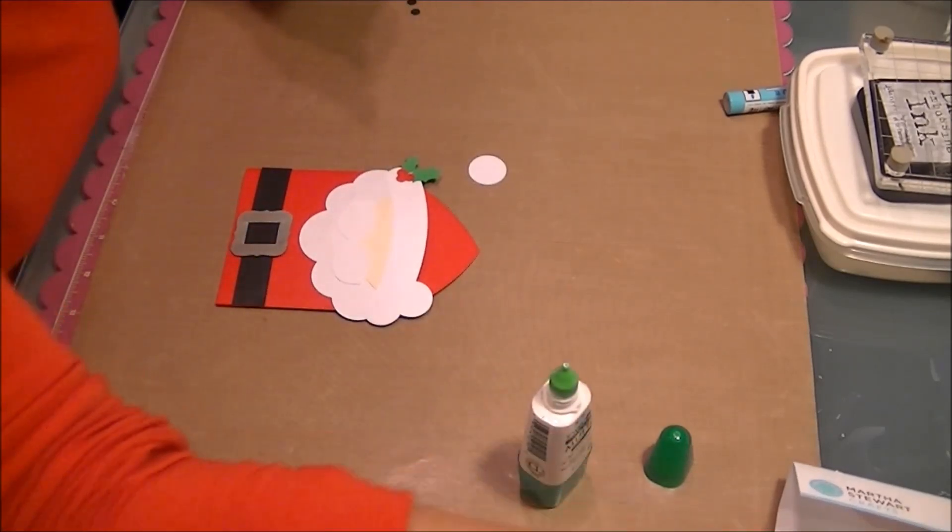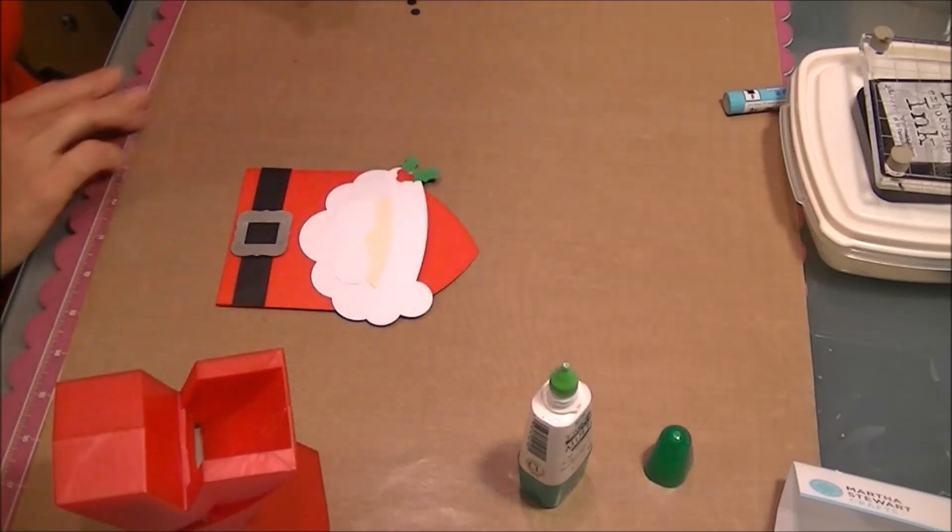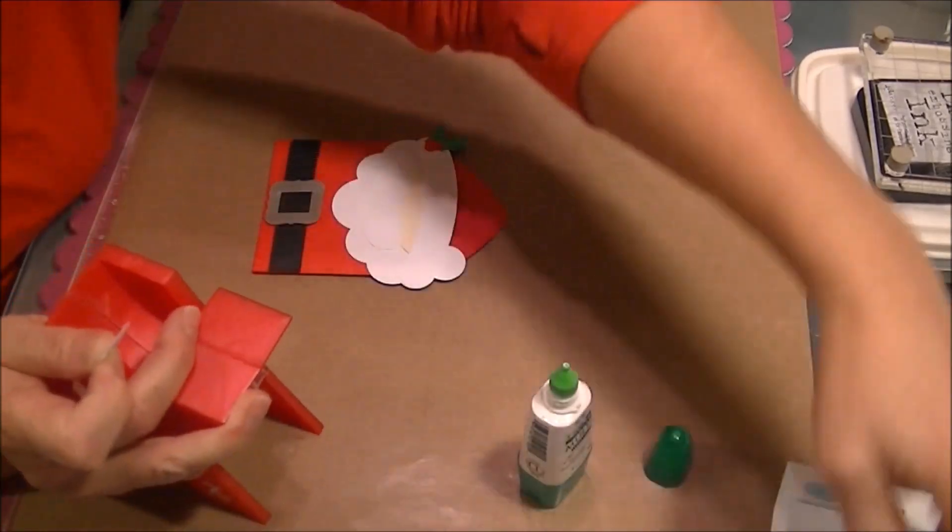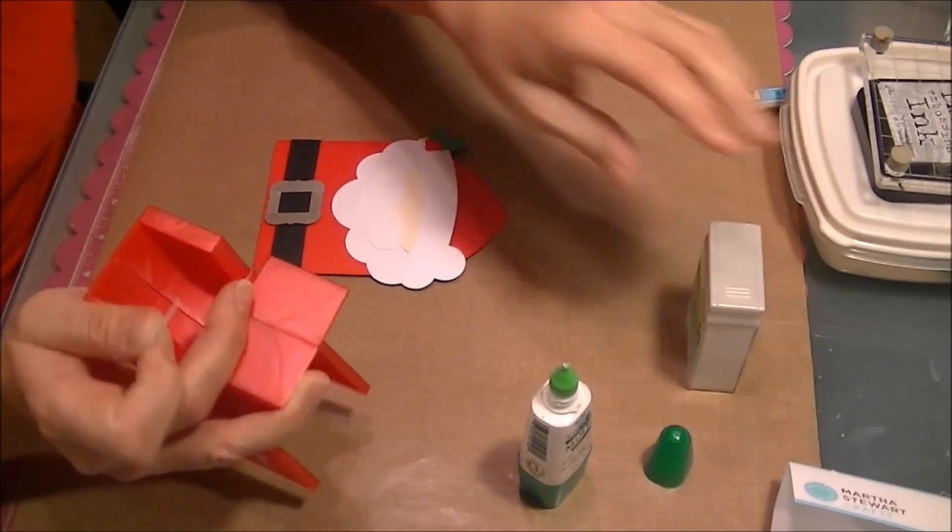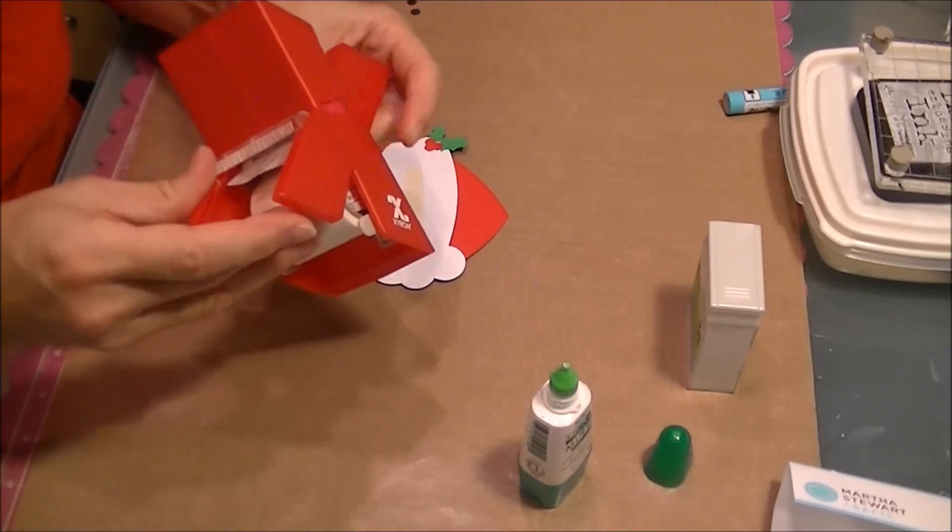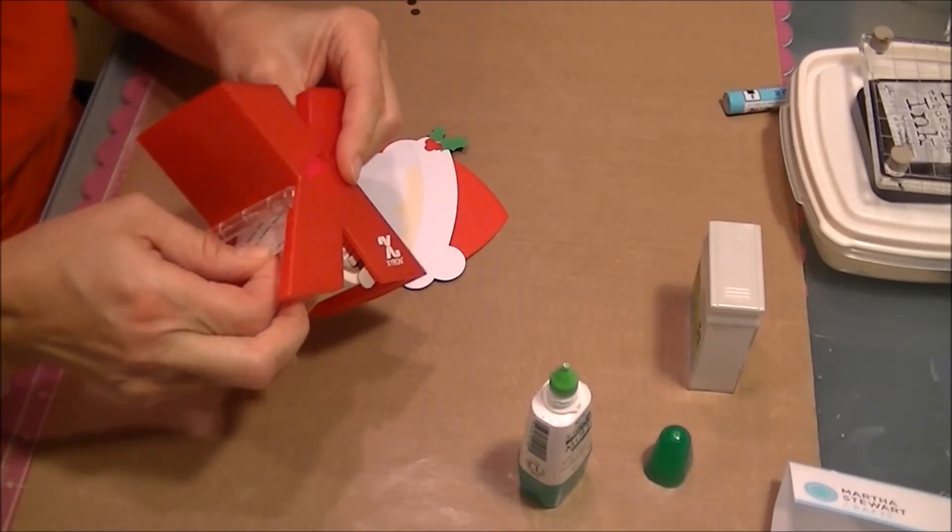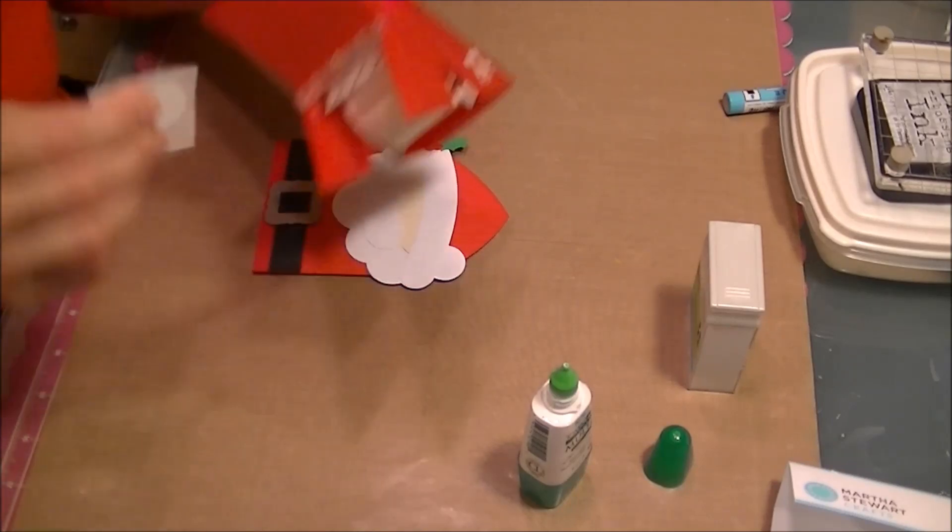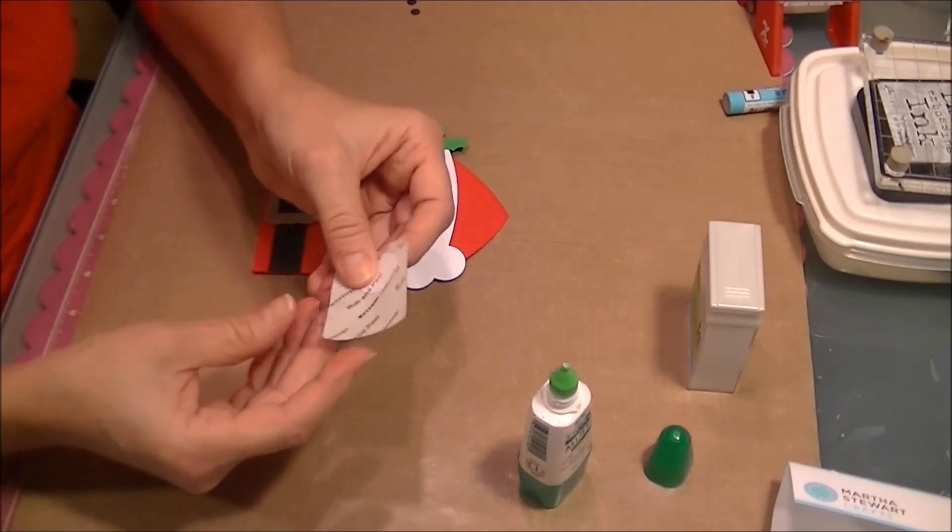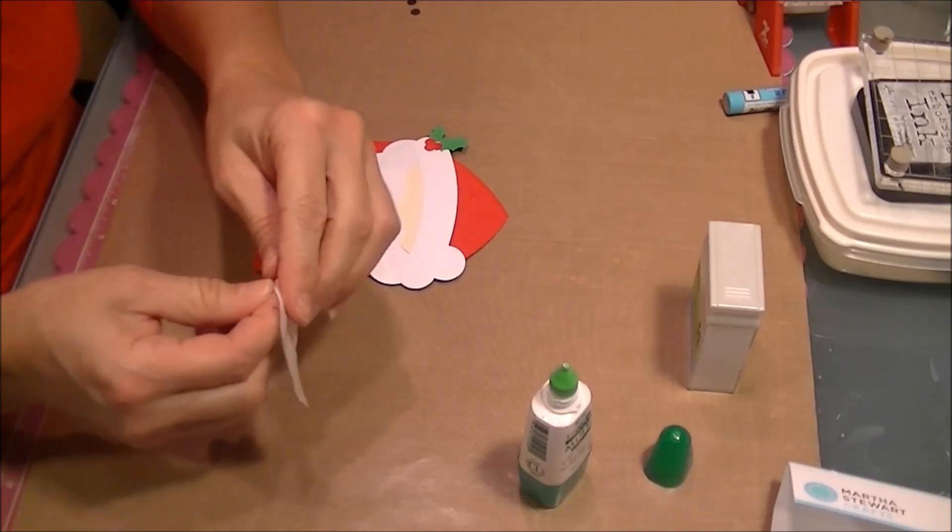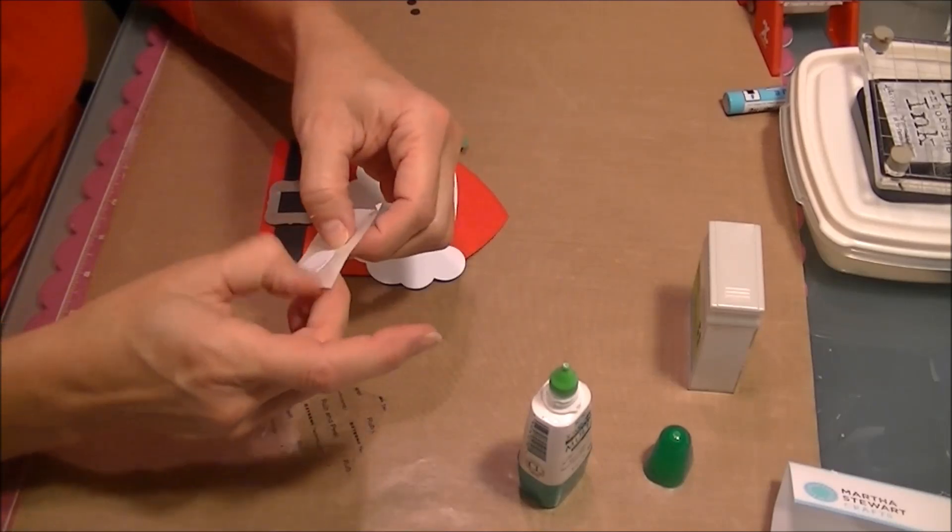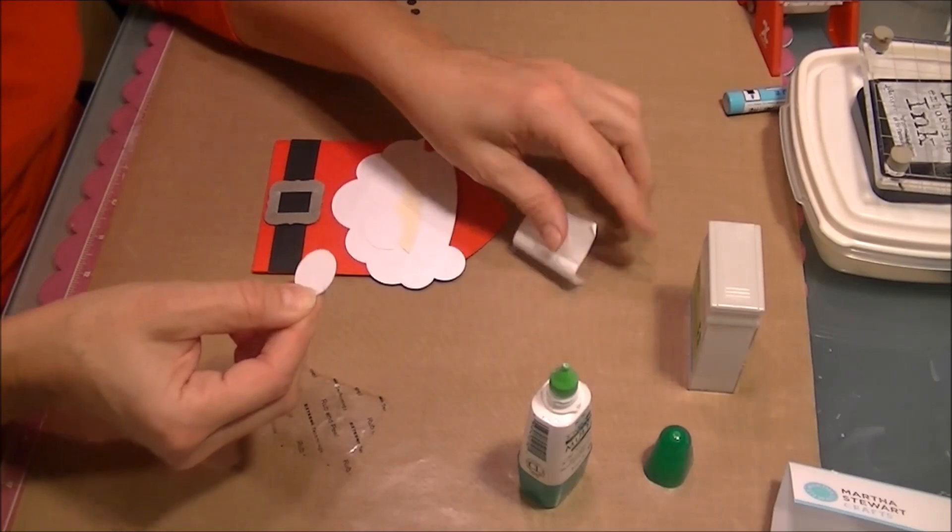For the little ball of his hat I'm going to use the Xyron and some flocking powder. See if we can get this to work through here. I haven't used this forever. There we go. Super easy. Rub it on there, get it good and sticky. Peel it off.